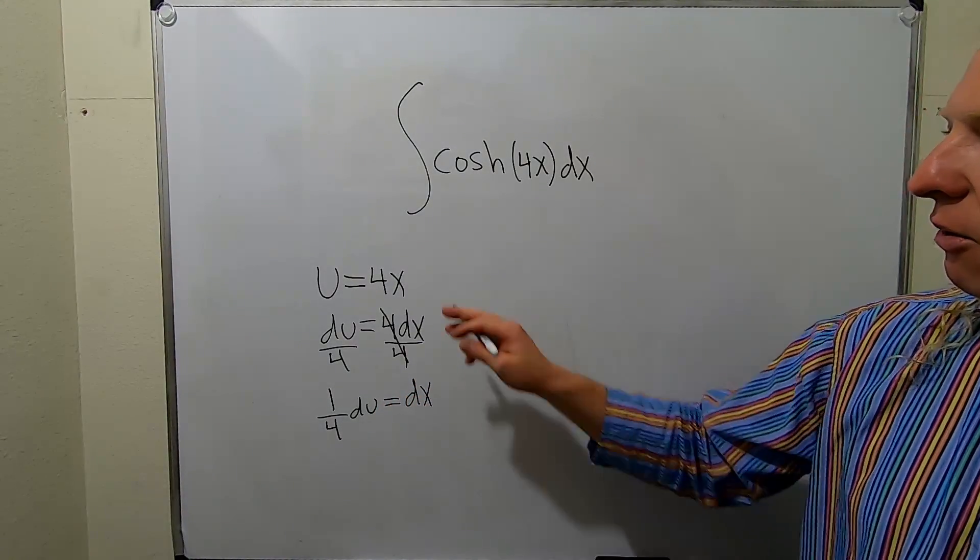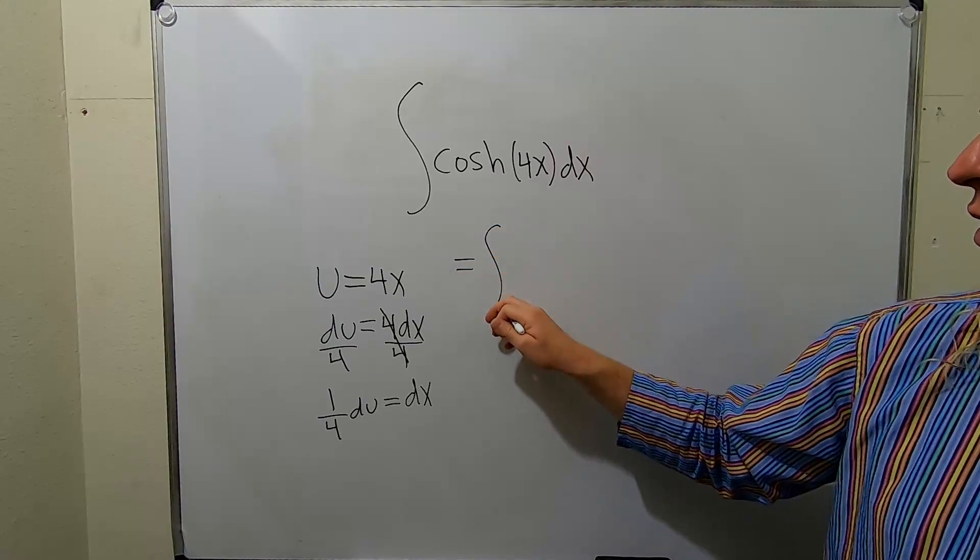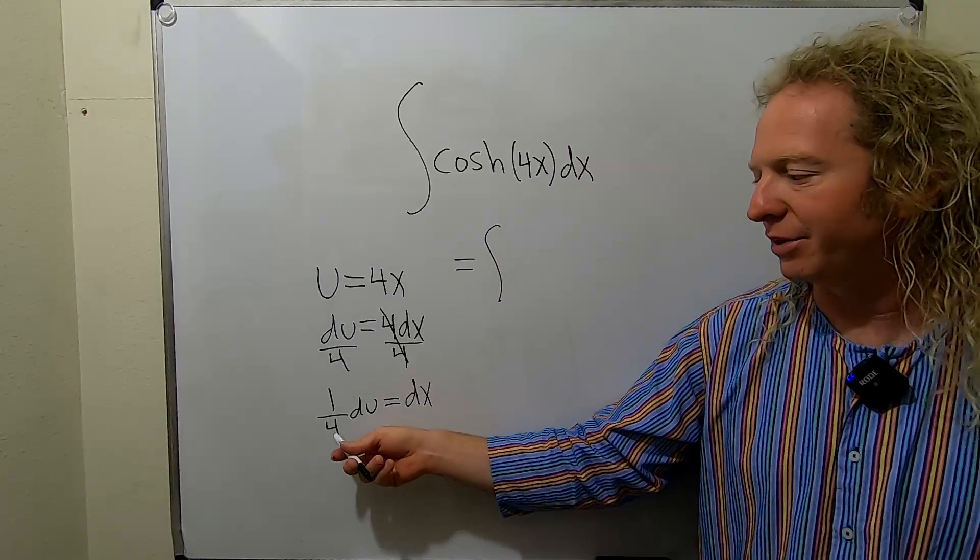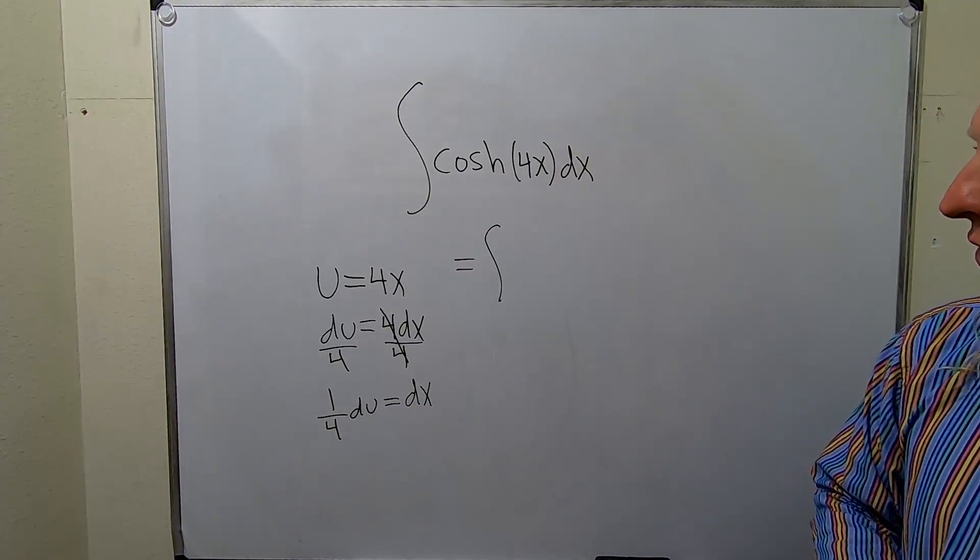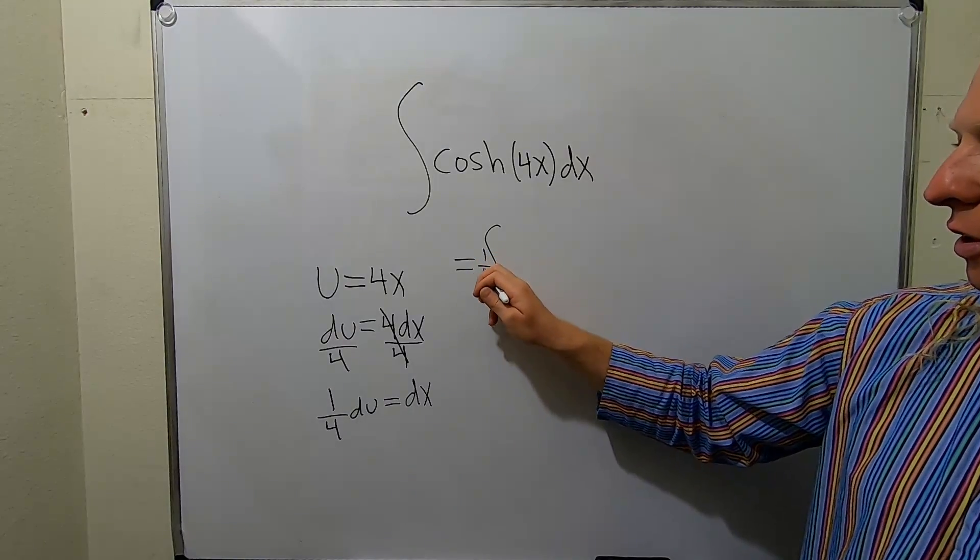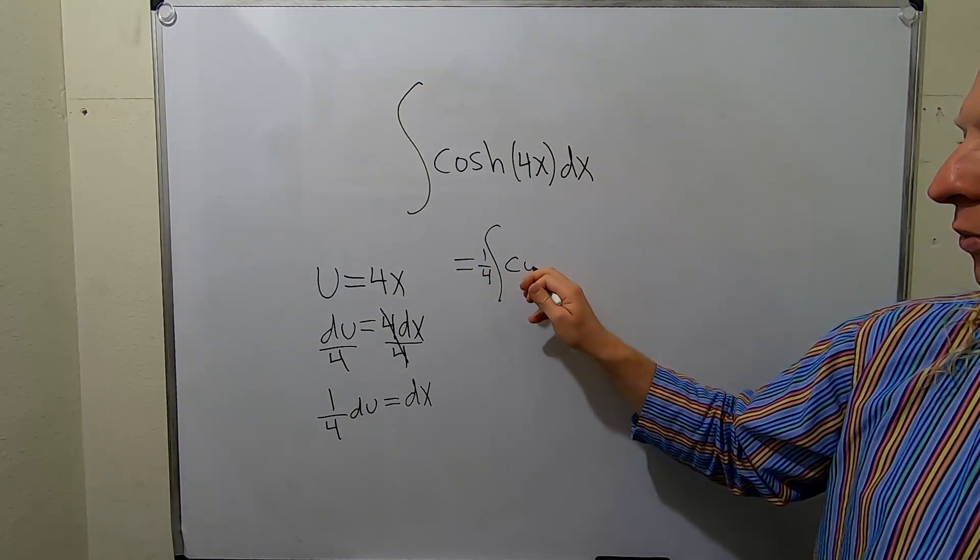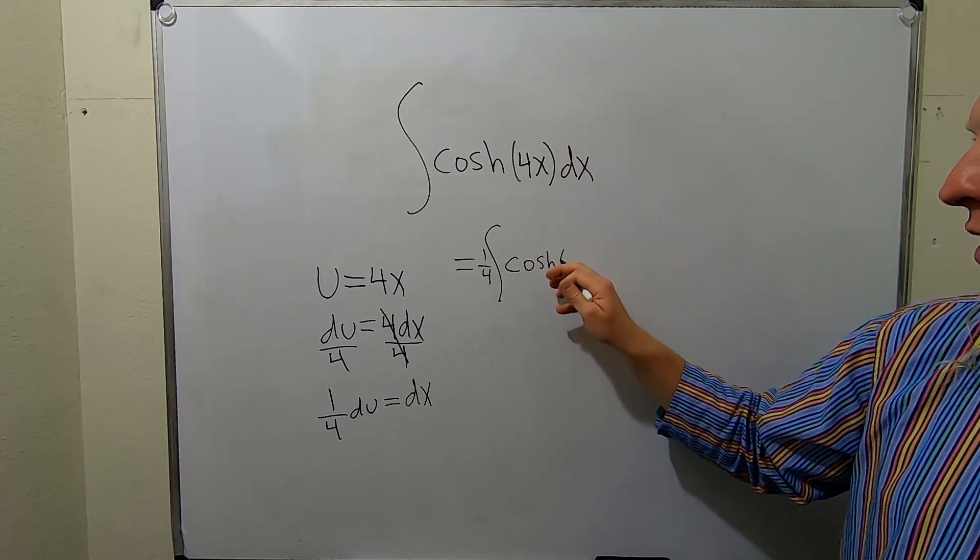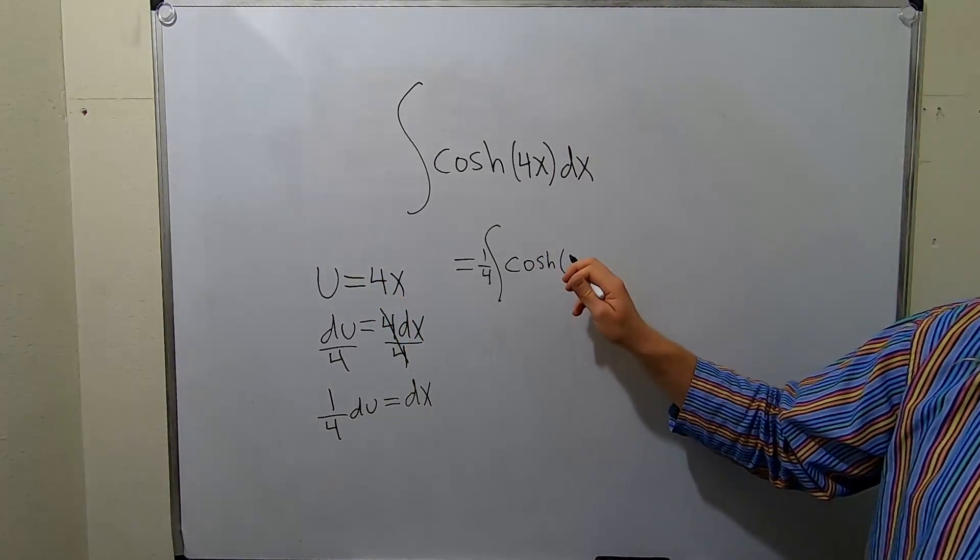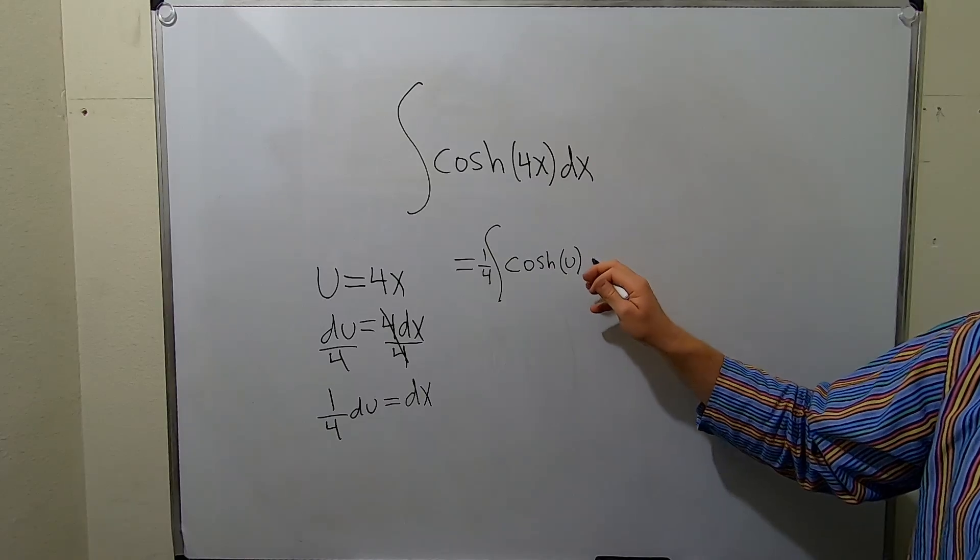All right, good stuff. So now this is equal to, let's see, the dx is just 1/4 du. So I'll pull out the 1/4, and then we just have cosh of u, because u is 4x. And then we have our du.